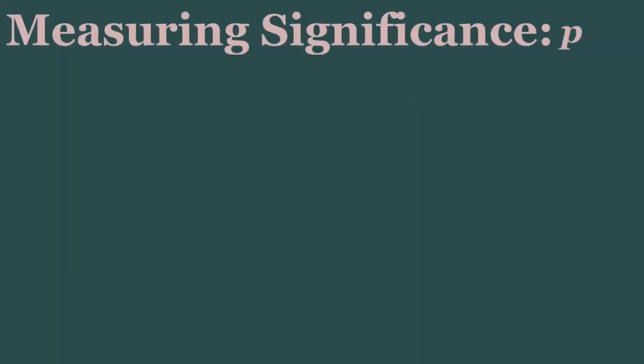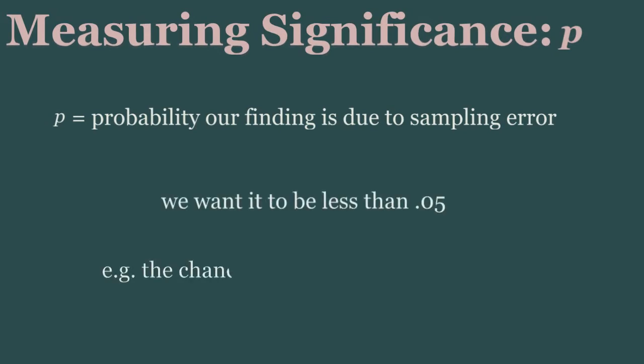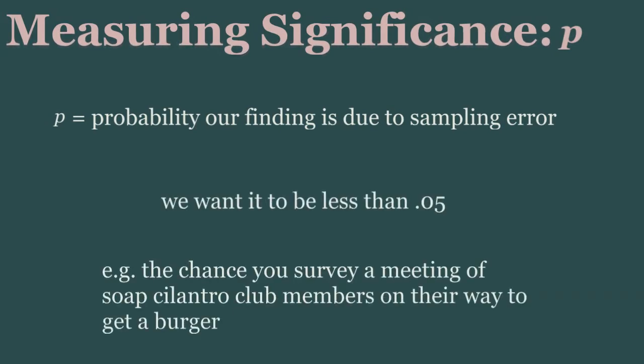To measure statistical significance, we do a bunch of fancy calculations to get what we call a p-value. P is the probability that our finding is due to sampling error. As a general rule, we consider findings statistically significant if p is less than 0.05. In other words, we want to be at least 95% sure that our finding is not simply due to chance.